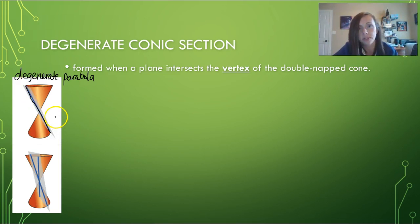The bottom one is the degenerate hyperbola, and that's when the plane goes through the vertex and is not parallel to the generating line.